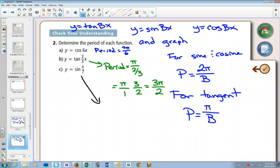And finally, for this last one, you could write x over 7 as 1 seventh x, so the B value would be 1 seventh. If you use the formula, your period would equal 2π divided by 1 seventh, which when you multiply by the reciprocal would be 14π.